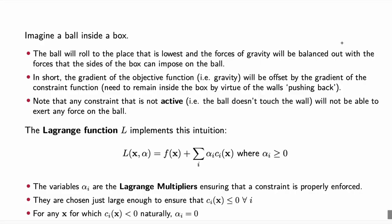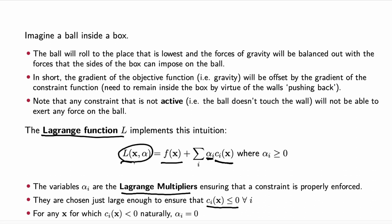This analogy allows us to derive the Lagrange function L. The Lagrange function takes the objective function we want to minimize and adds all the constraint functions with non-negative weights alpha_i — a weighted sum of all c_i's. These alpha_i's are the Lagrange multipliers, set just large enough to ensure the constraint function is smaller or equal to zero for all i when minimizing the Lagrange function.